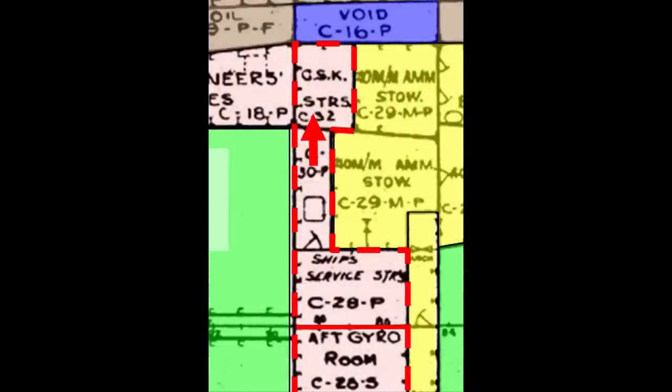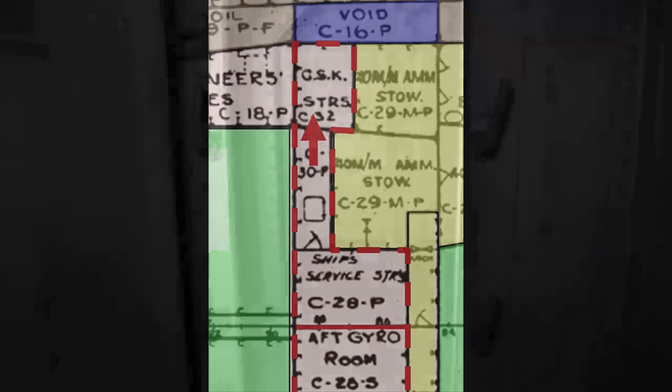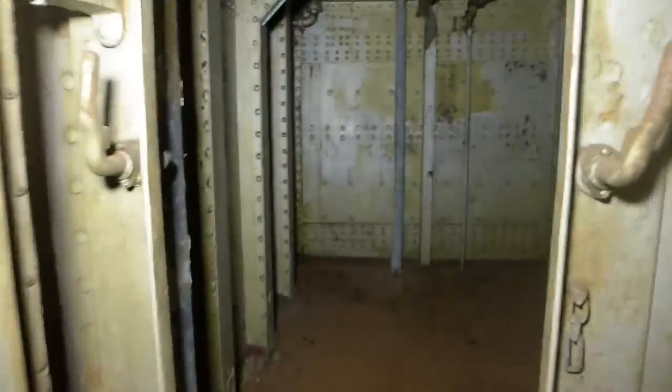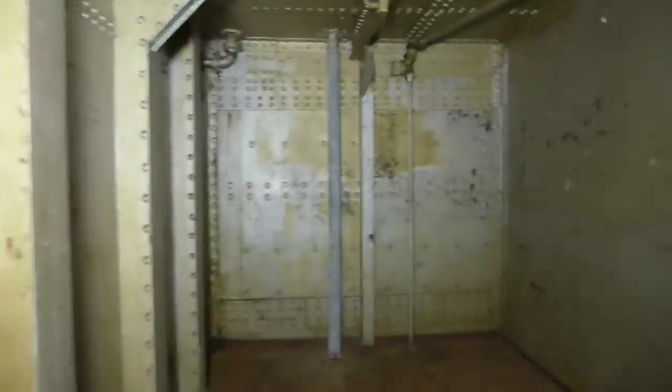Back in C-30P, we'll look outboard where we can see and enter C-32 GSK stores. This storeroom could be used for a variety of stores that could include anything from light bulbs to toilet paper to paintbrushes.